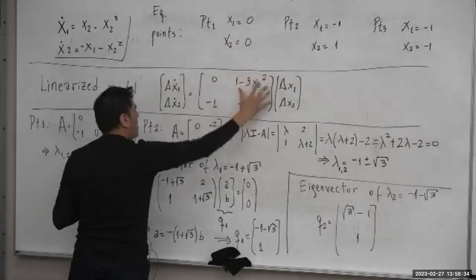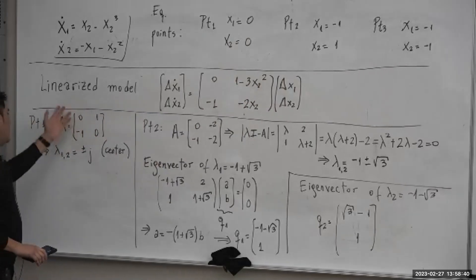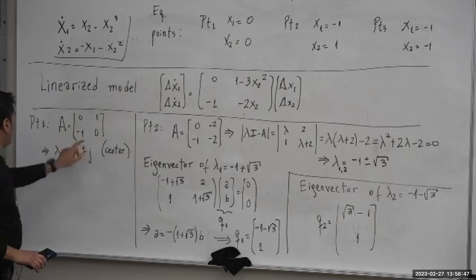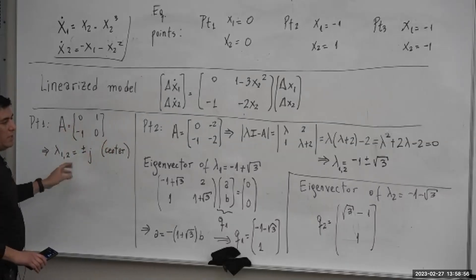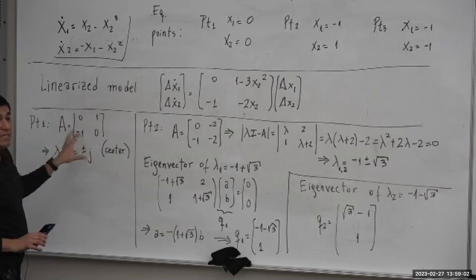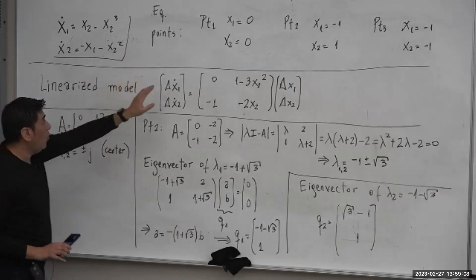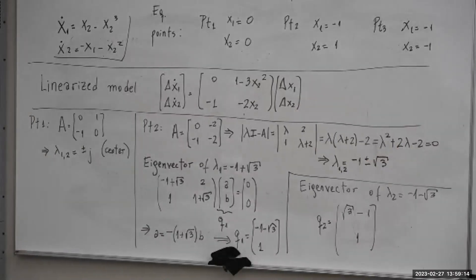The matrix A of the linearized system at the origin gives us these eigenvalues. By inspection of the matrix, the eigenvalues are plus or minus j, so this is a center. We can calculate eigenvectors, but that will not give us information about how to plot these in the phase plane. All we can say at this point is that the equilibrium point at the origin is going to be a center — a linear system that will oscillate.